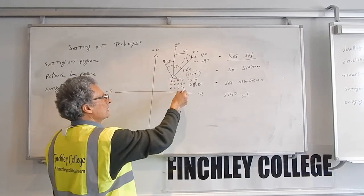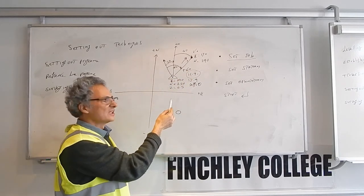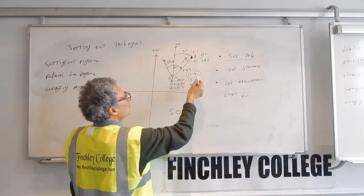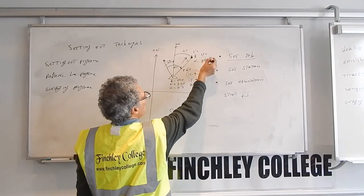You simply do a free station first, you find out where the instrument is set, and you simply give the coordinate of the points you want to set out to the instrument.